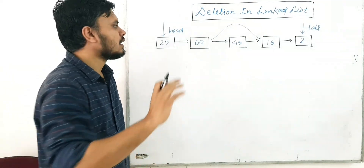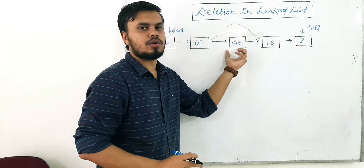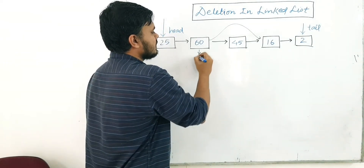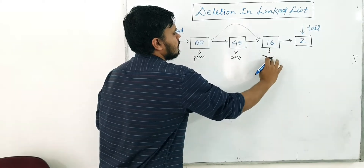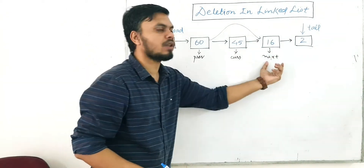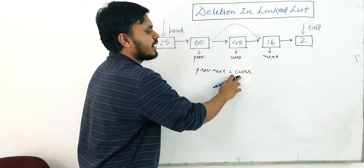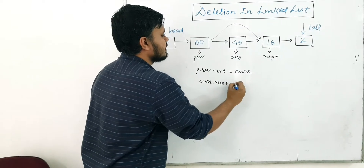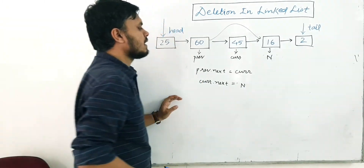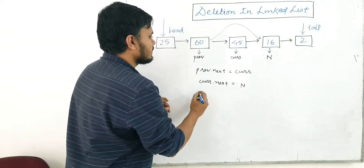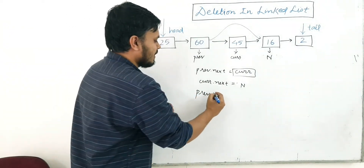The concept is very clear. We'll find this node, then ask the previous node to point to the next node of the current node. If this is the previous node, this is the current node, and this is the next node, we want previous to point to next. So previous.next is nothing but current, and current.next is n. Can we substitute current and write: previous.next.next equals n?